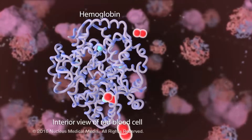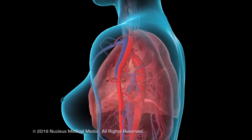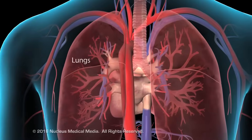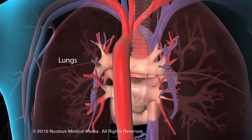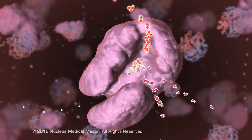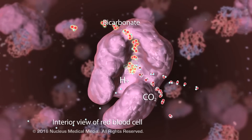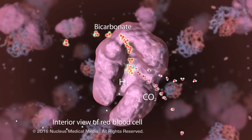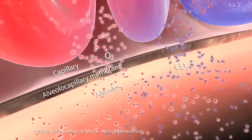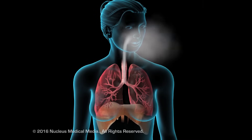After delivering oxygen to the tissues, the carbon dioxide-rich blood returns to the lungs through the venous circulation and then to the pulmonary artery. Inside each erythrocyte, the bicarbonate conversion is reversed, recreating carbon dioxide, which diffuses across the erythrocyte into the alveoli and lungs and is excreted out of the body.